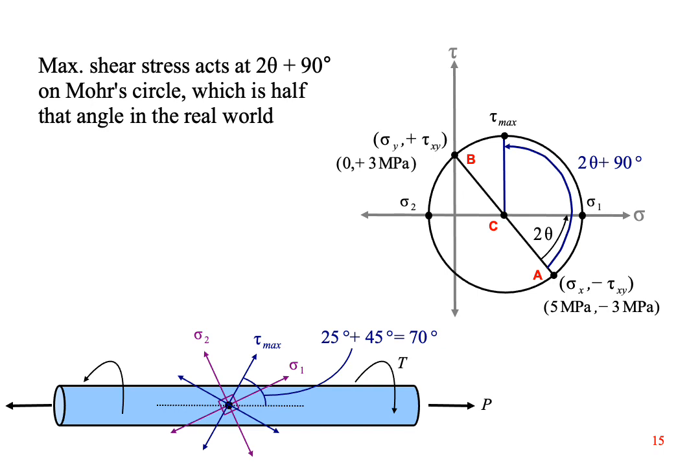The maximum shear stress is at the very top of the circle. This is 90 degrees counterclockwise from the horizontal axis, but all angles in Mohr's circle are double angles in the real world. So the maximum shear stress in the real world is 45 degrees above the principal stress sigma 1, which is a total of 70 degrees above the axis of the rod.